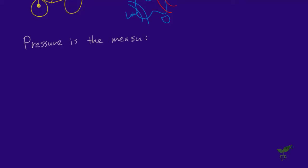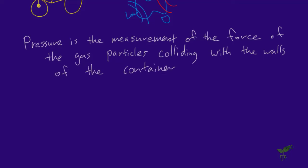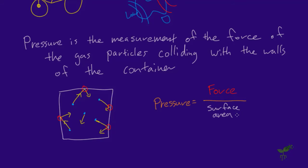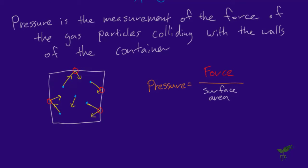So gas pressure is the measurement of the force of the gas particles colliding with the walls of the container. Here we have a container and some gas particles. These are moving around freely, and as they hit the side of the container, that's what we're measuring. So pressure equals the force over the surface area.